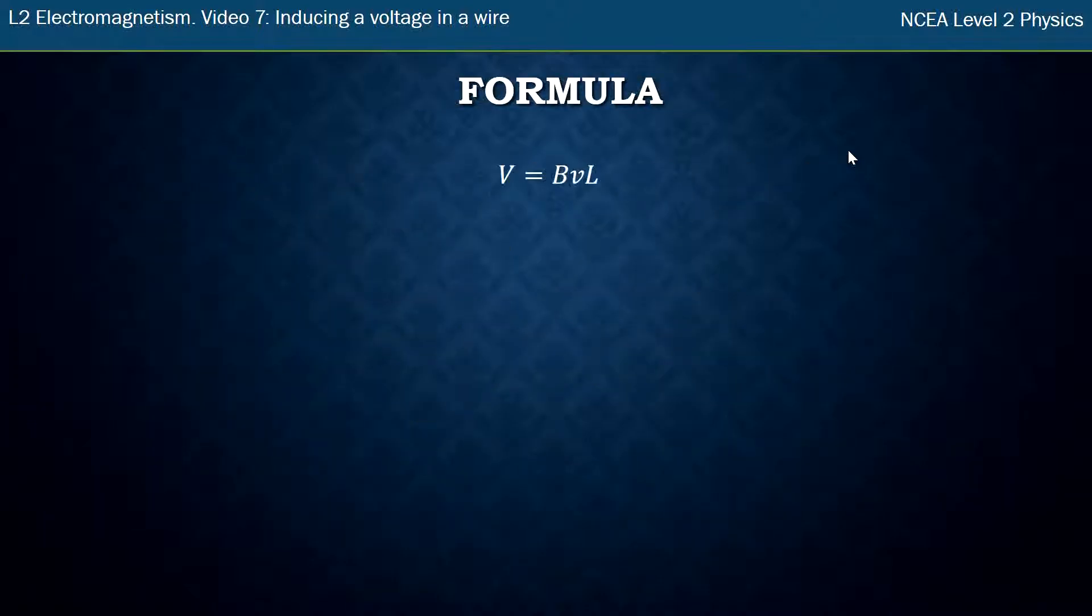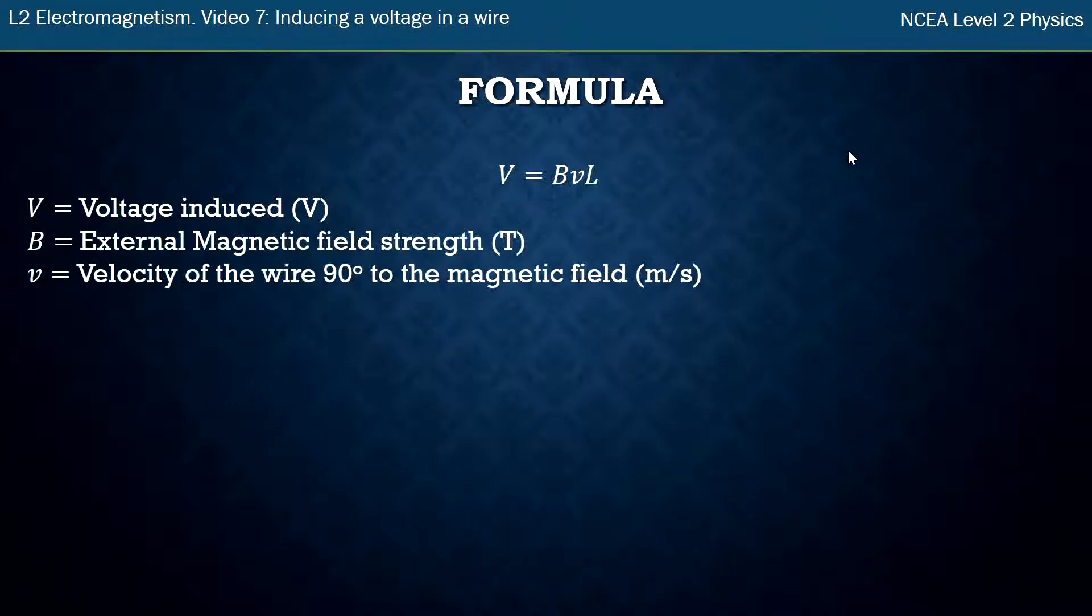And finally, the formula. So the voltage induced is given by V equals BvL, where V is voltage induced, B is external magnetic field strength, v is velocity of the wire 90 degrees to the magnetic field, and L is length of the wire in the field.